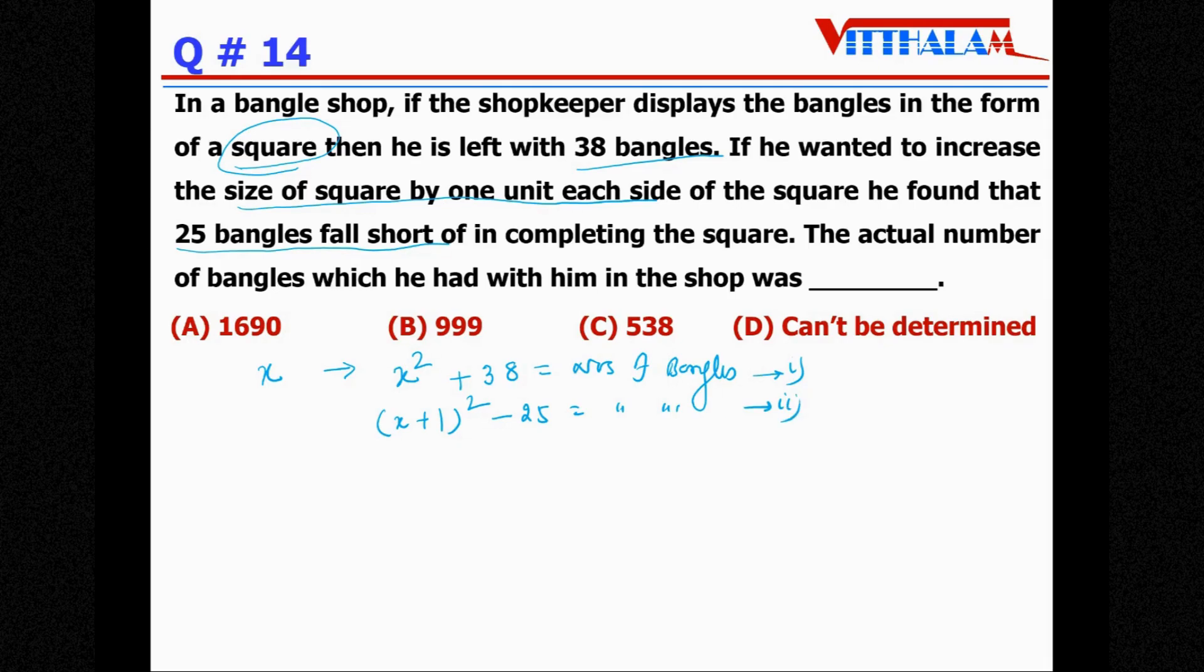Now just equate. Therefore, x² + 38 = (x+1)², that is x² + 2x + 1 - 25. So this 1 minus 25 is nothing but minus 24. Let's take everything. So x² get cancelled. 0 = 2x - 24 - 38.